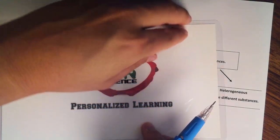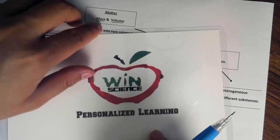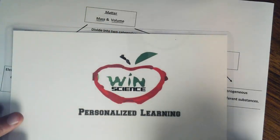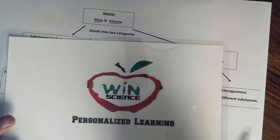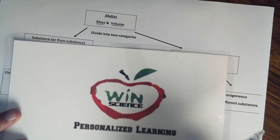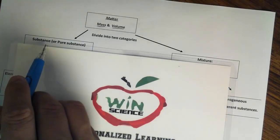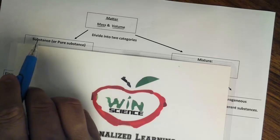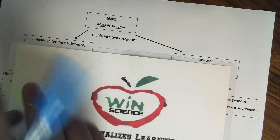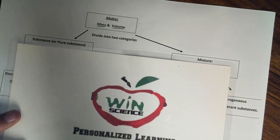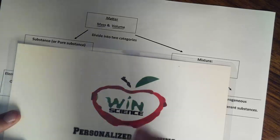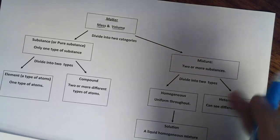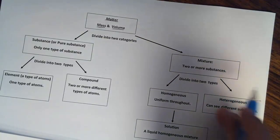So again, matter is anything that has mass and can take up space, or volume. And matter can be divided into two distinctive categories. The first one is substance, or pure substance — the word substance itself already identifies that it is pure, 100% of its kind. Then we have mixture, which is basically a mixture of substances.